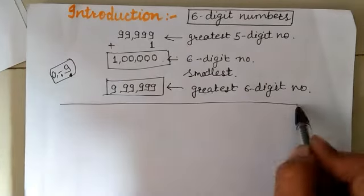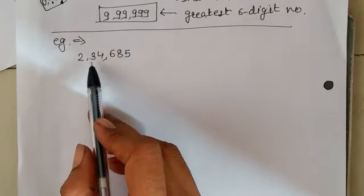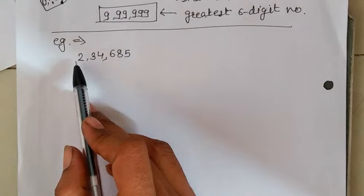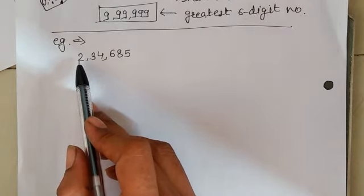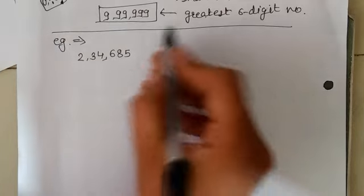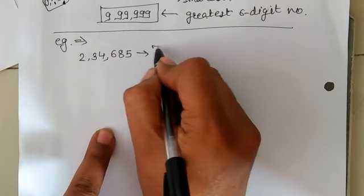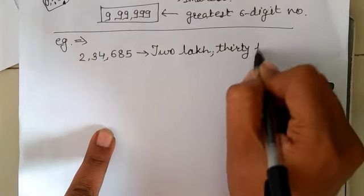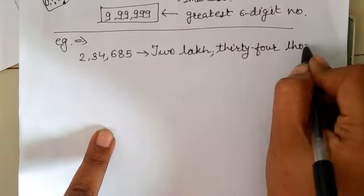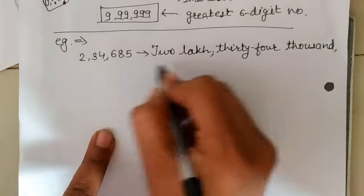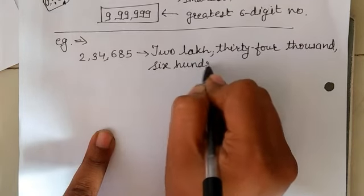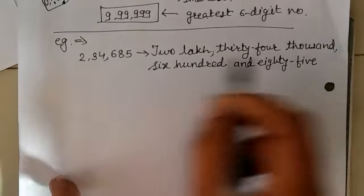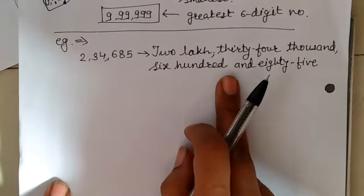Now students, let's move towards another example regarding 6-digit numbers. Here is one of the 6-digit numbers I have taken. This 5 is at unit place, then 10, 100, 1000, 10,000, and lakh — so this 2 is at the lakh position. So how do we read it? 2,03,685. Let's see how to write that number in words: two lakh three thousand six hundred and eighty-five. This is the 6-digit number in figures and the same number written in words.